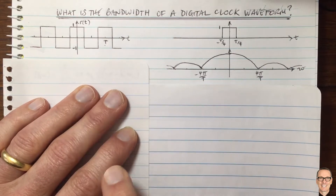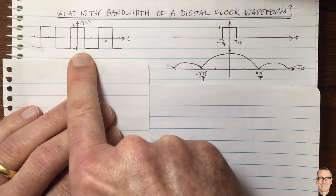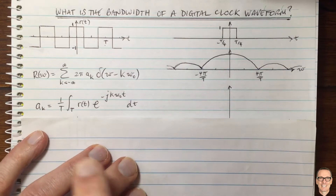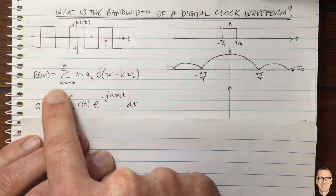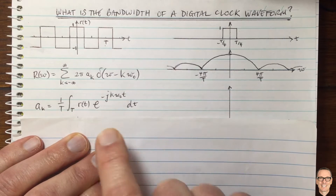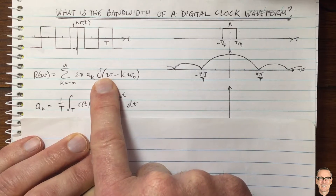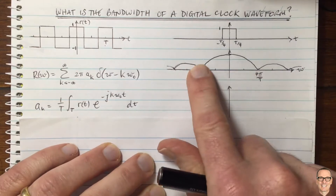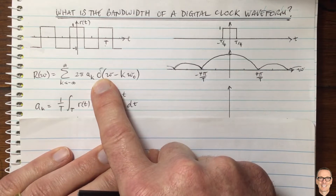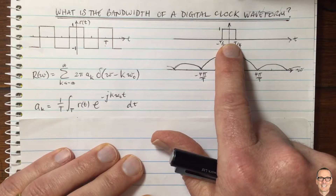This clock waveform is periodic, while the square pulse was aperiodic. For periodic waveforms we need to work out the Fourier series. The Fourier transform is related to the Fourier series and includes the Fourier coefficients a_k. Because it's periodic, the Fourier transform will be made up of a series of delta functions, only having frequency components where there are delta functions.